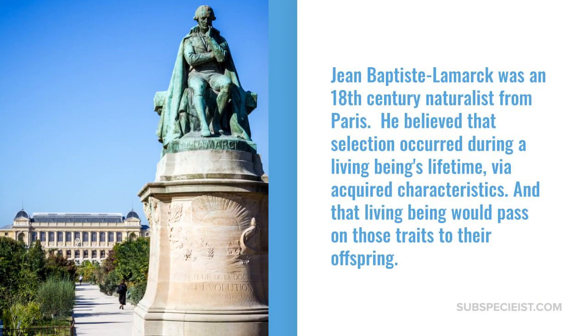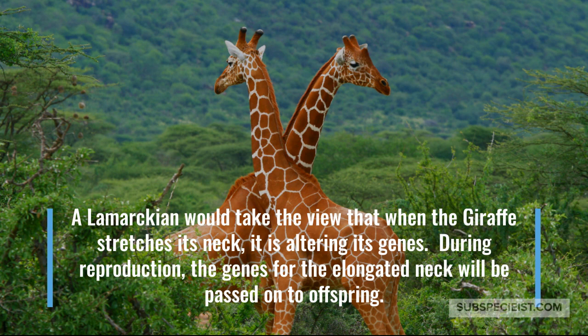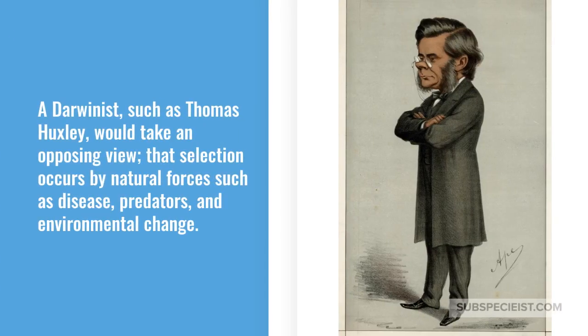Jean-Baptiste Lamarck was an 18th century naturalist from Paris. He believed that selection occurred during a living being's lifetime via acquired characteristics, and that living being would pass on those traits to their offspring. A Lamarckian would take the view that when the giraffe stretches its neck, it is altering its genes; and during reproduction, the genes for the elongated neck will be passed on to offspring. A Darwinist such as Thomas Huxley would take an opposing view that selection occurs by natural forces such as disease, predators, and environmental change.